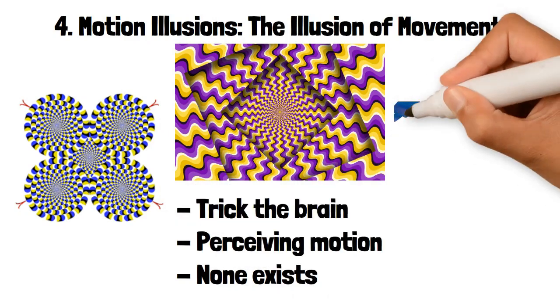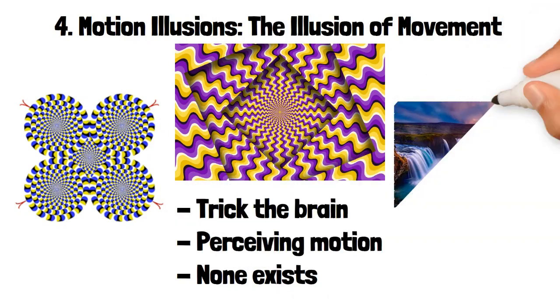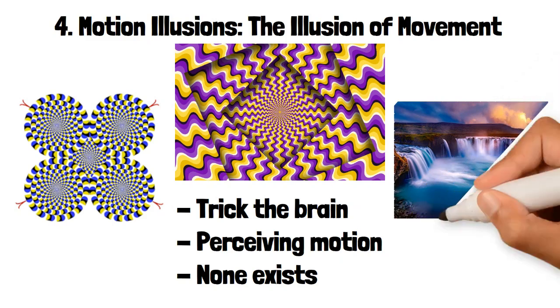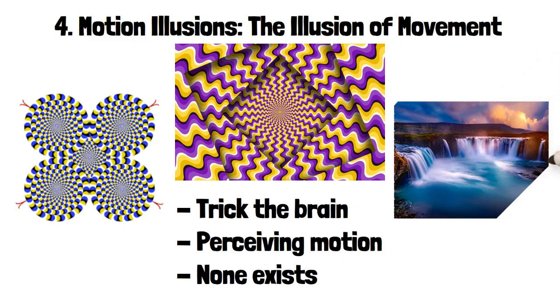Another example is the Waterfall illusion, where after staring at a moving waterfall and then looking at a stationary object, the object appears to move in the opposite direction of the waterfall.